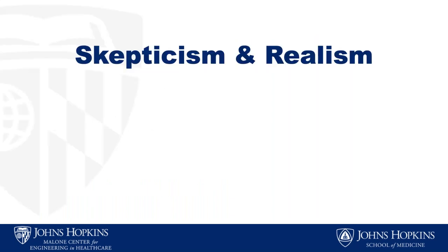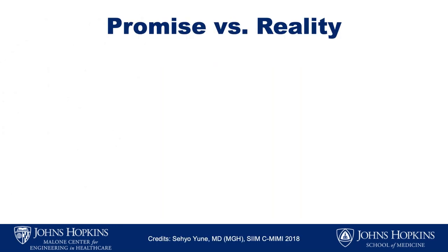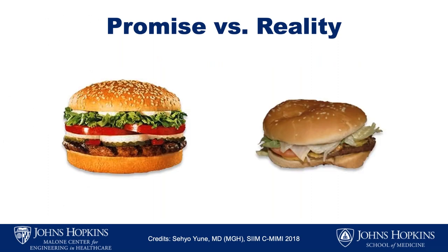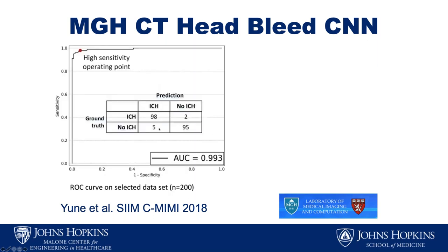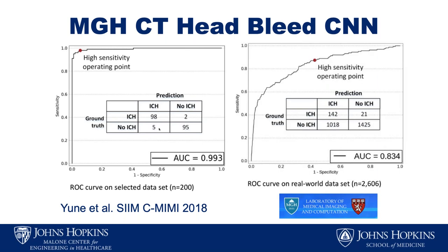Our last theme is Skepticism and Realism. In AI, there's often a disconnect between what's promised and reality. An algorithm developed at MGH in Sinhodo's lab was trained to detect head bleeds, and found an AUC of 0.99 — essentially a perfect diagnostic test — for detecting subtle subarachnoid hemorrhage. But when tested on images from the same hospital using a different CT scanner, the AUC dropped to 0.83. Still respectable, but a far cry from 0.99. Oftentimes these algorithms that perform well in a specific test environment don't always generalize well.